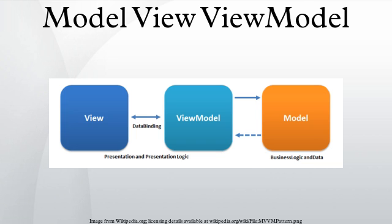MVVM was designed to make use of data binding functions in WPF to better facilitate the separation of view layer development from the rest of the pattern by removing virtually all GUI code from the view layer. Instead of requiring user interface developers to write GUI code, they can use the framework markup language and create bindings to the view model, which is written and maintained by application developers. This separation of roles allows interactive designers to focus on UX needs rather than programming of business logic, allowing for the layers of an application to be developed in multiple work streams for higher productivity.